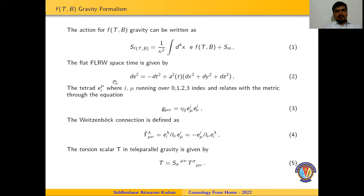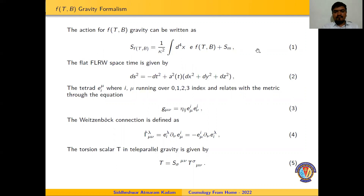Let us now discuss the F(T,B) gravity formalism. The modification in GR can be obtained by replacing the Ricci scalar R by a general function of the torsion scalar T and boundary term B. The action formula for F(T,B) gravity is represented in equation number 1, where S_M represents the matter Lagrangian, kappa represents the gravitational constant, d⁴x represents the four-velocity vector, and E represents the metric tetrad determinant.